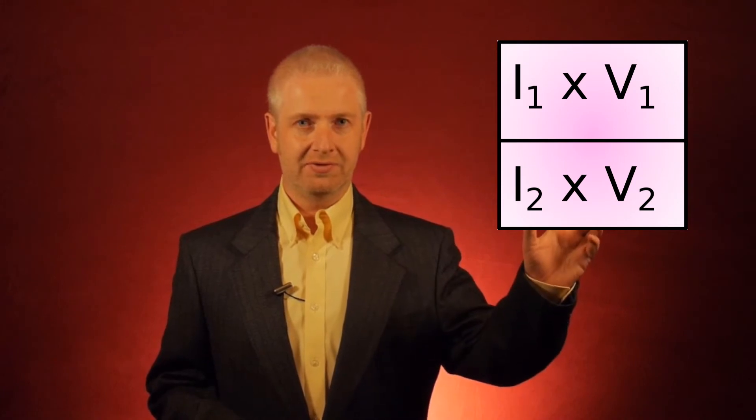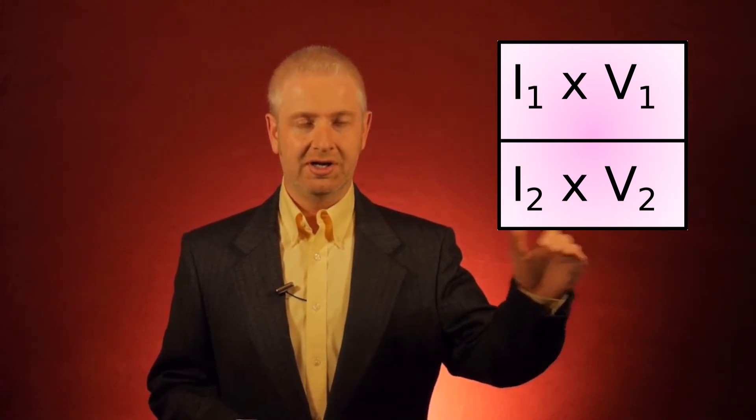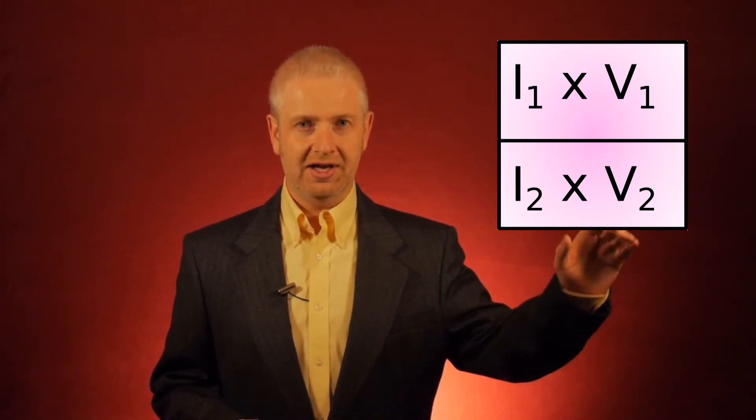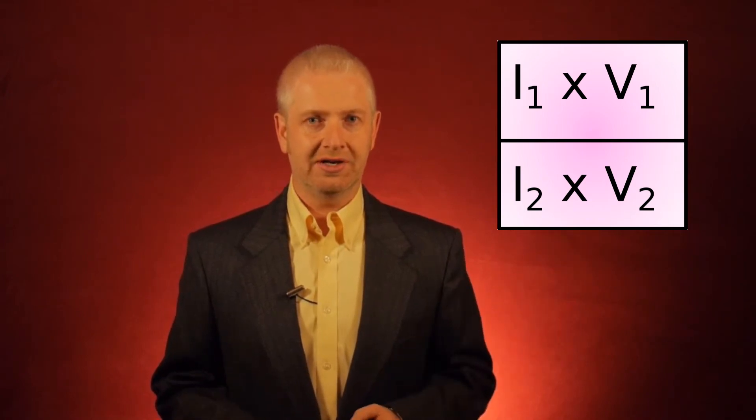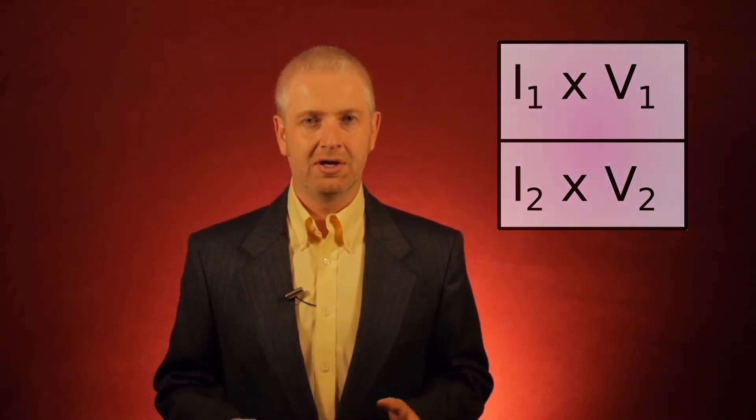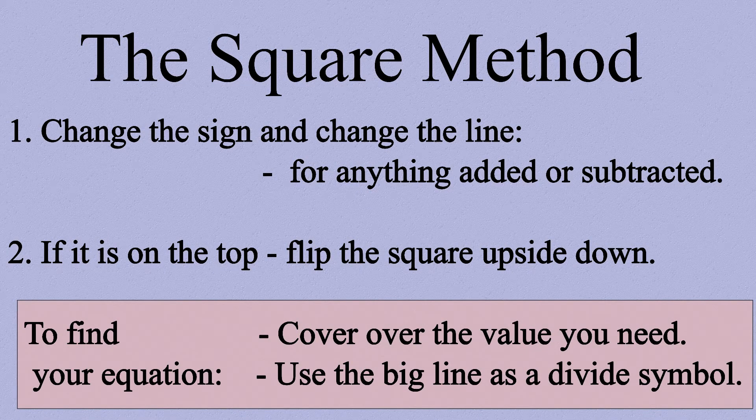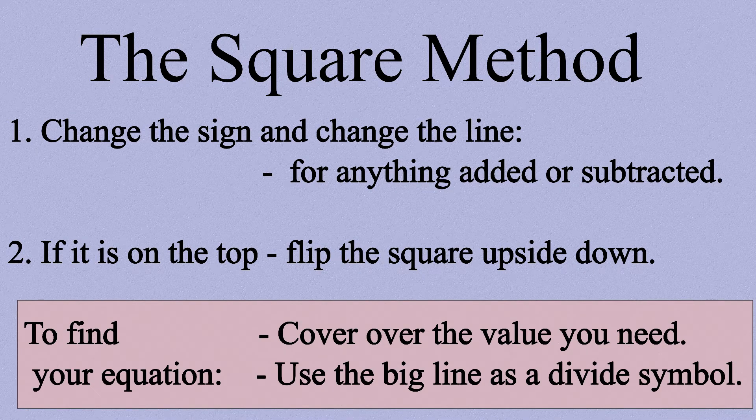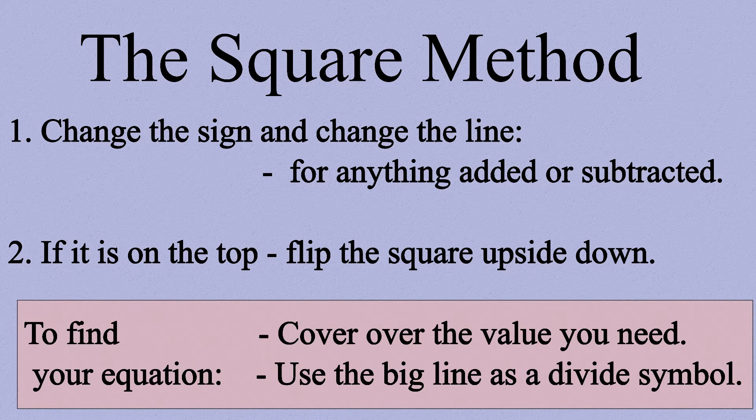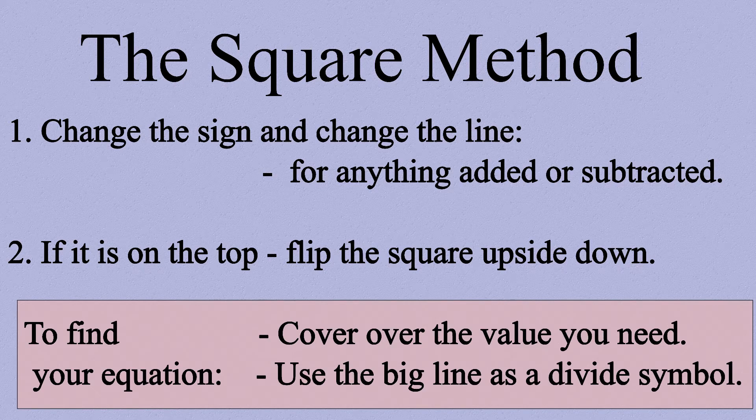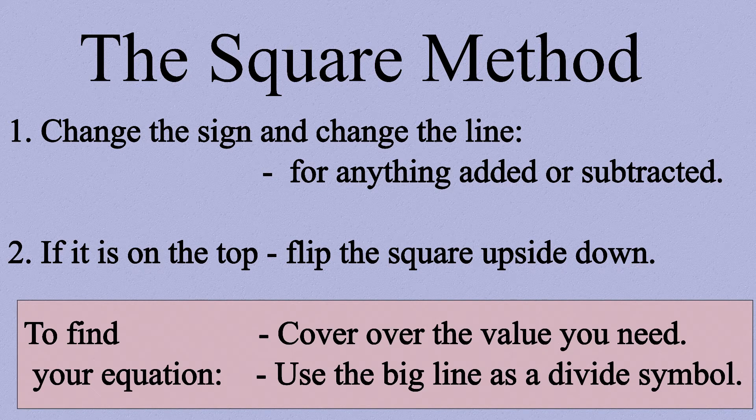So we'd have I1V1 on the top. Then we would have a line across the square and I2V2 at the bottom. Okay, so here are the two rules for using the equation square. Rule number one: if anything else is added to or subtracted from the quantity you're interested in, change the sign, change the line. So change the sign of whatever is added to or subtracted from it and put it on the other line.